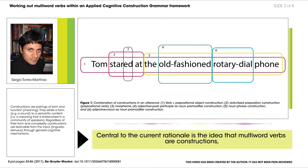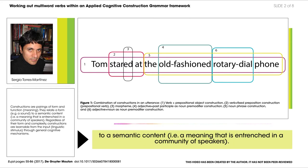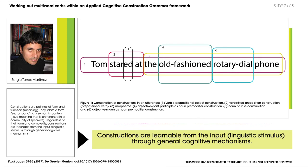Central to the current rationale is the idea that multi-word verbs are constructions — that is, pairings of form and function relating a form, e.g. a sound, to semantic content, i.e. a meaning that is entrenched in a community of speakers. Constructions are learnable from the input, linguistic stimulus, through general cognitive mechanisms.